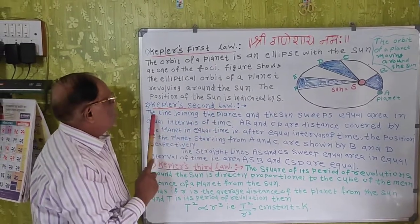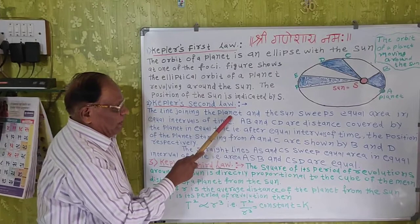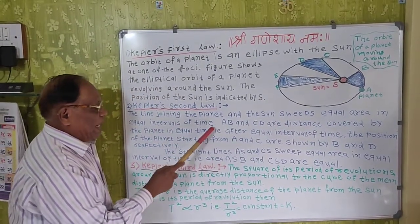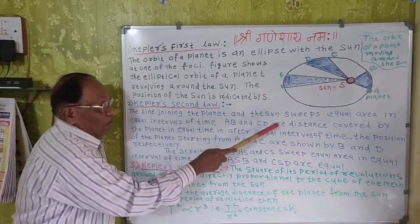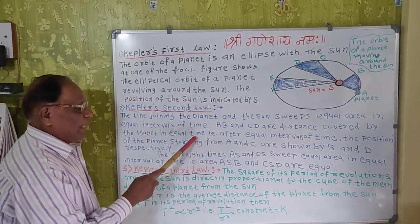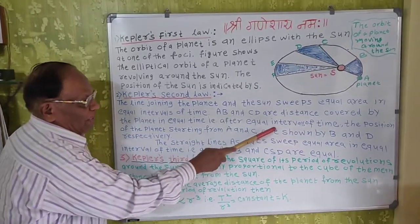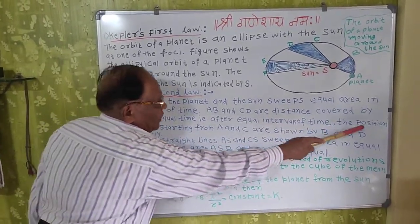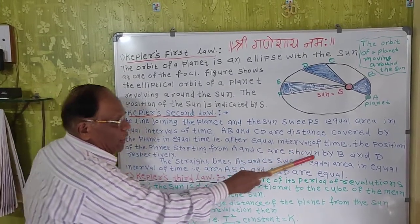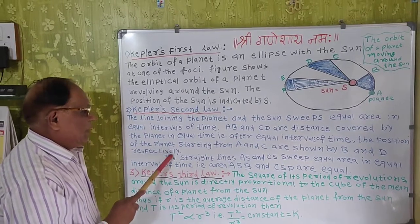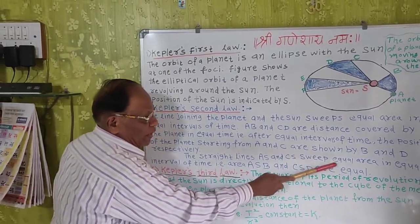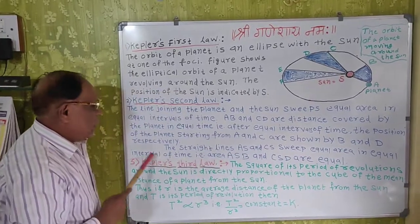Kepler's second law: The line joining the planet and the sun sweeps equal area in equal interval of time. A, B and C, D are distances covered by the planet in equal time. After equal interval of time, the position of the planet starting from A and C are shown by B and D respectively. The straight lines AS and CS sweep equal area in equal interval of time.